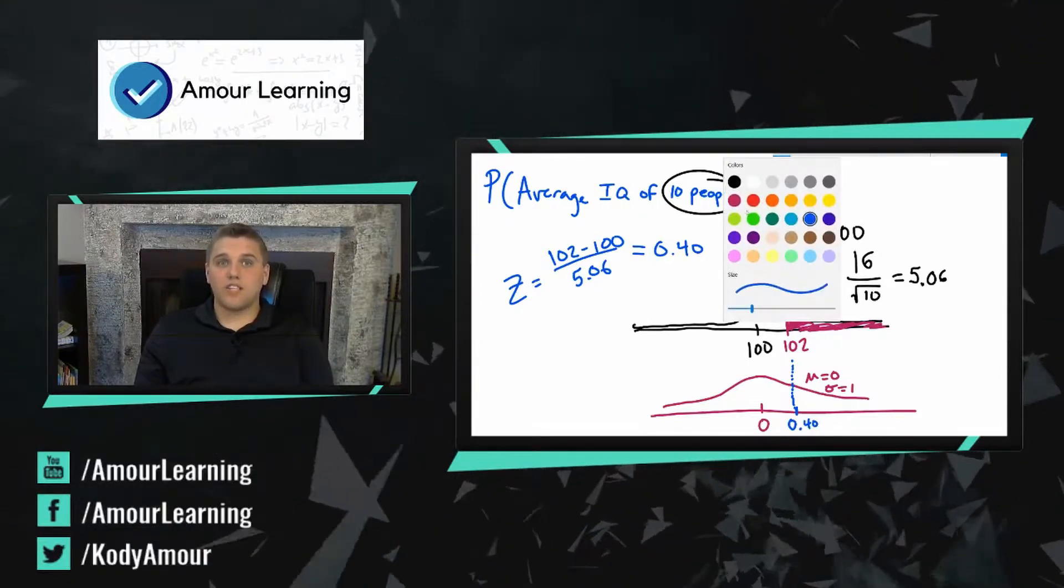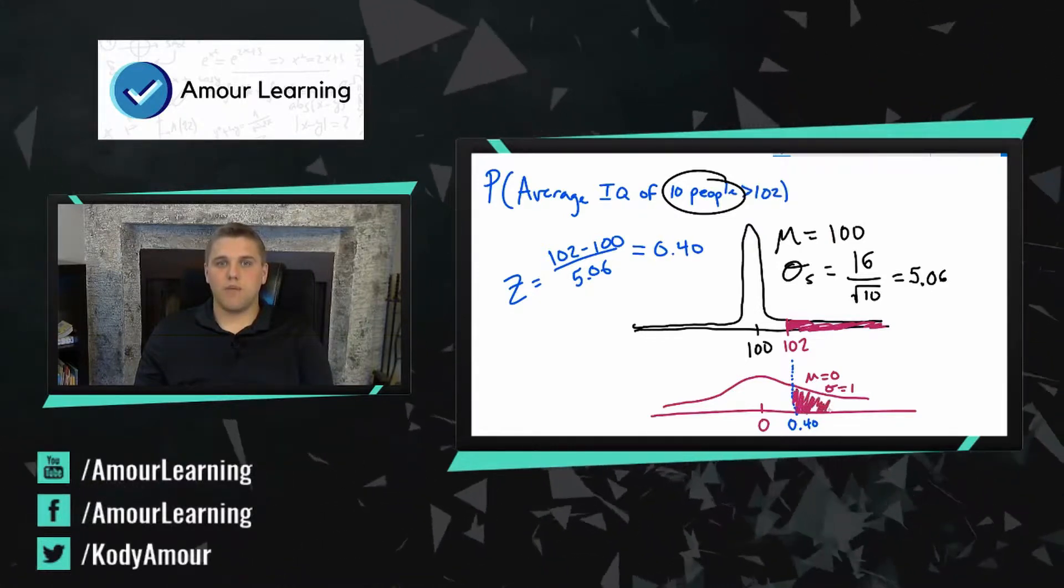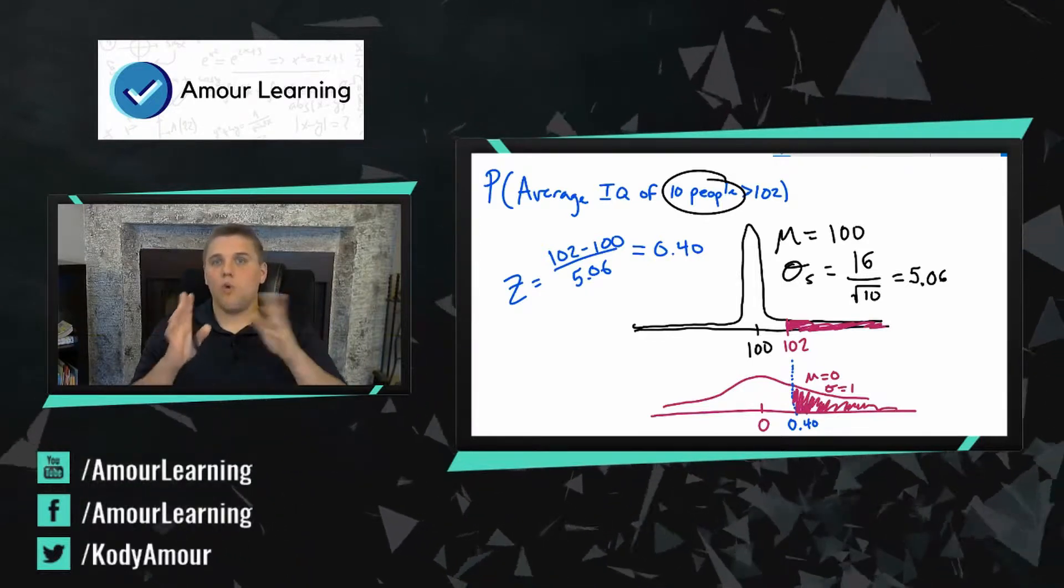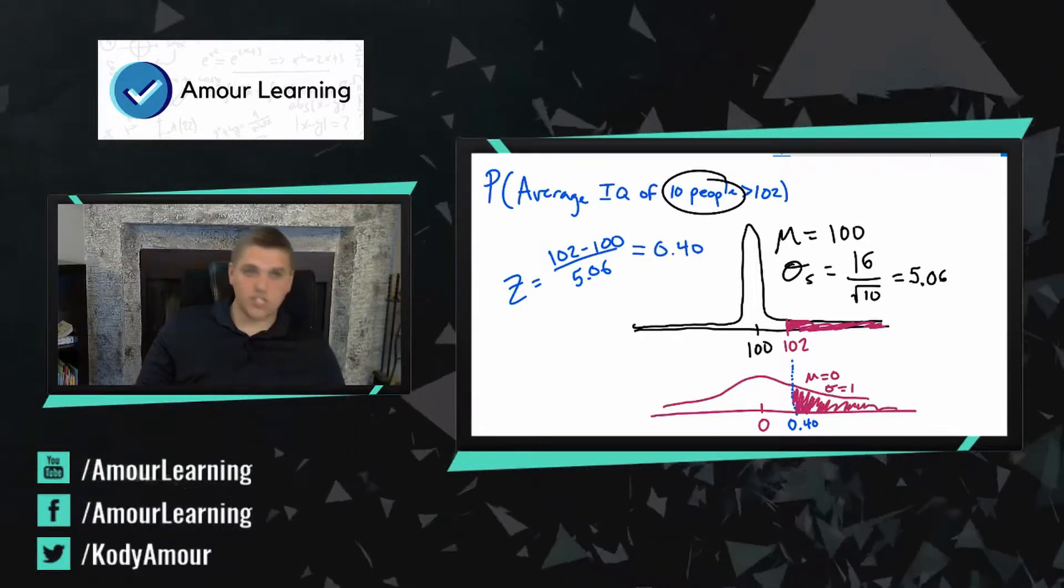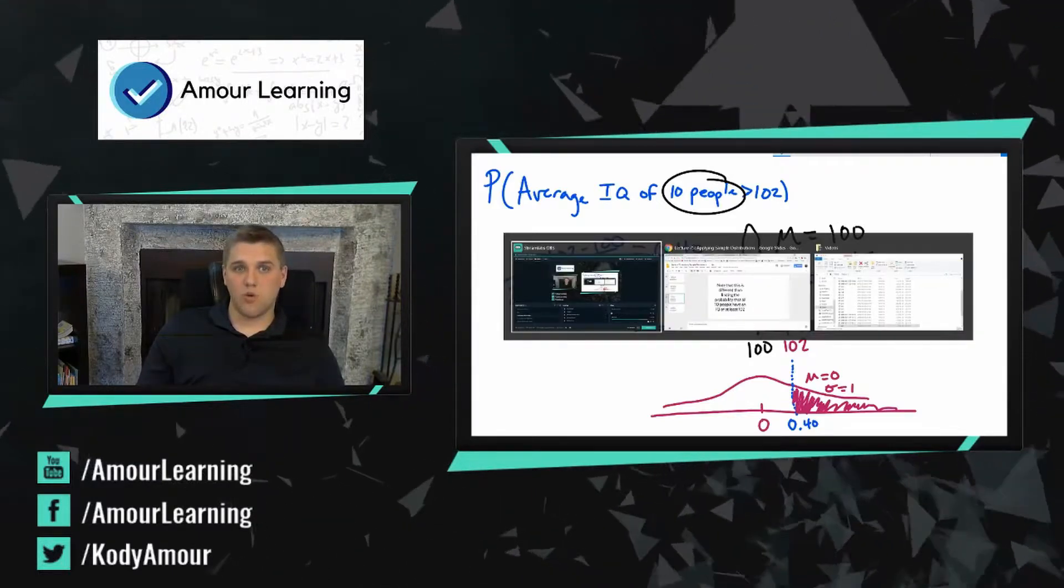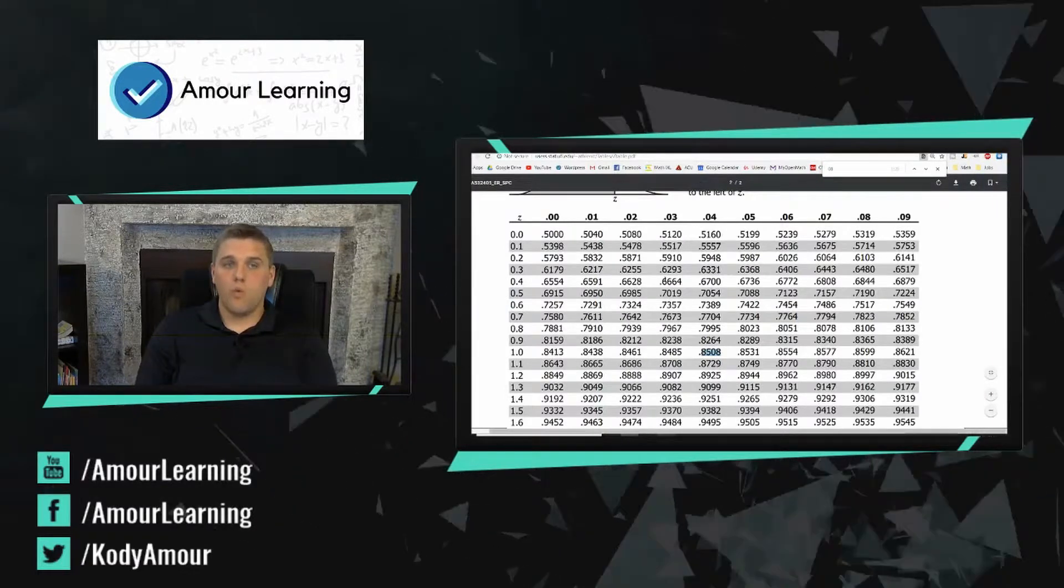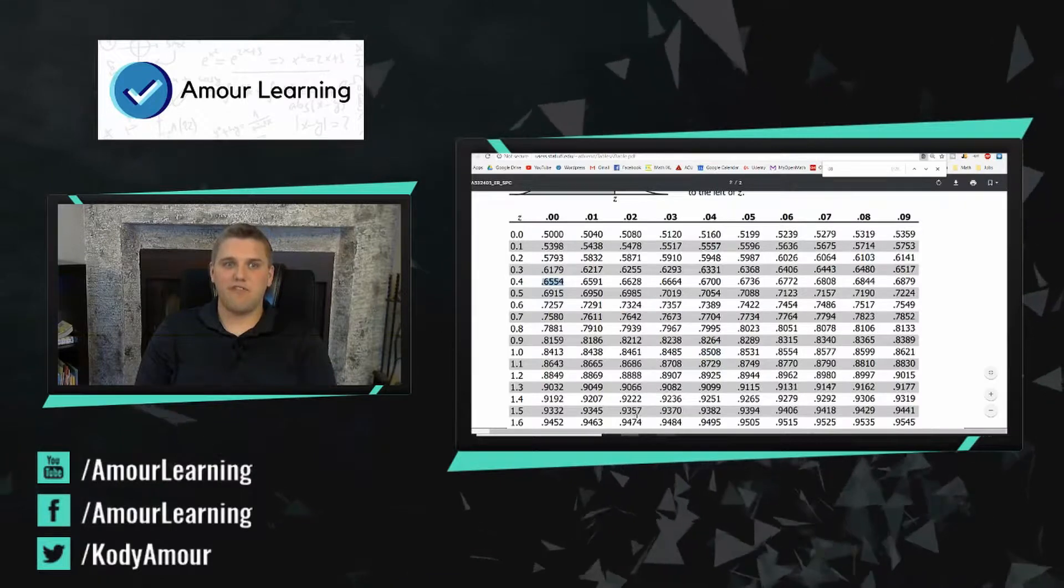Which means that this z-score right here is 0.40. Now we're trying to find the area to the right of this z-score, which is marked by this region right here. But unfortunately my z-table will only tell me the area to the left of any z-score. But let's do that anyways. I'm going to pull up my z-table and look at my z-score of 0.4, which is right here: 0.6554.